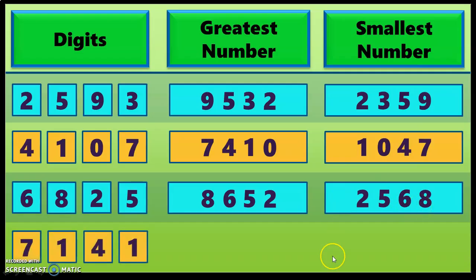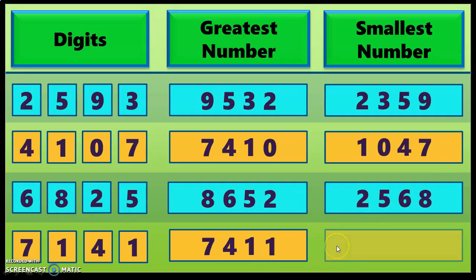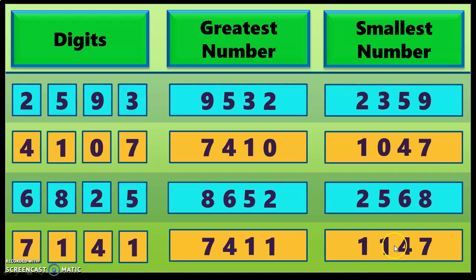Let us do one last example. We have four digits: 7, 1, 4 and 1. To form the greatest number, arrange the digits from big to small. The biggest number is 7, then 4, and the remaining two digits are both 1, so write 1 and 1 in those positions. The greatest number formed is 7411. To write the smallest number, arrange from small to big. The smallest digits are 1 and 1, so write 1 in the thousands place and 1 in the hundreds place, then 4, then 7. The smallest number formed is 1147.